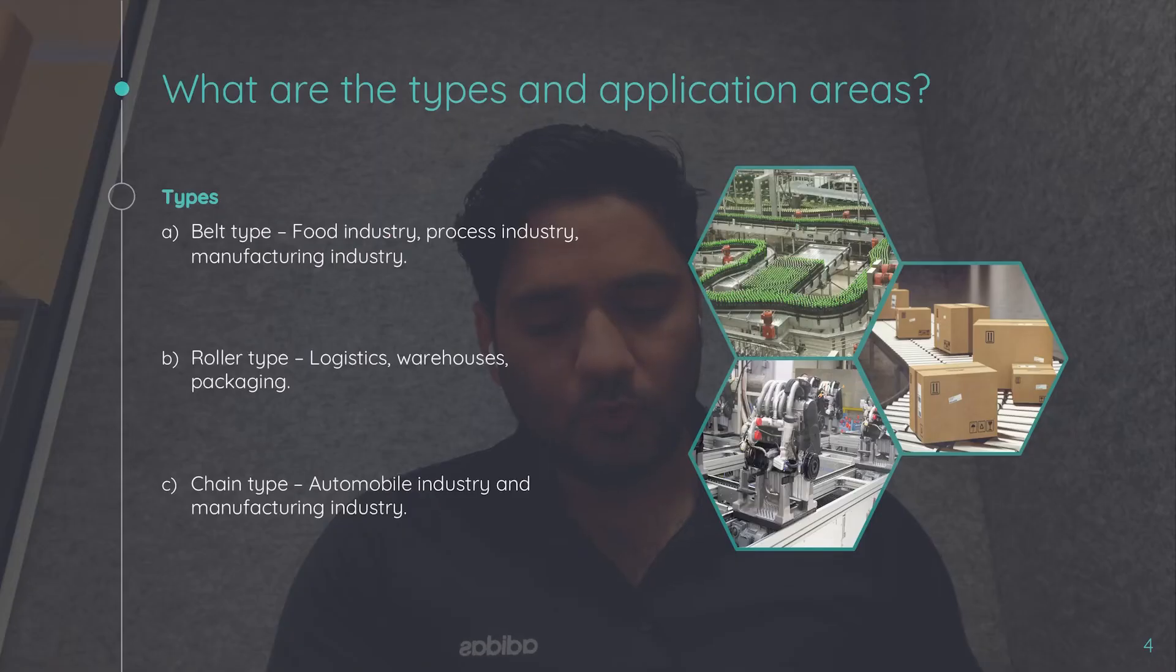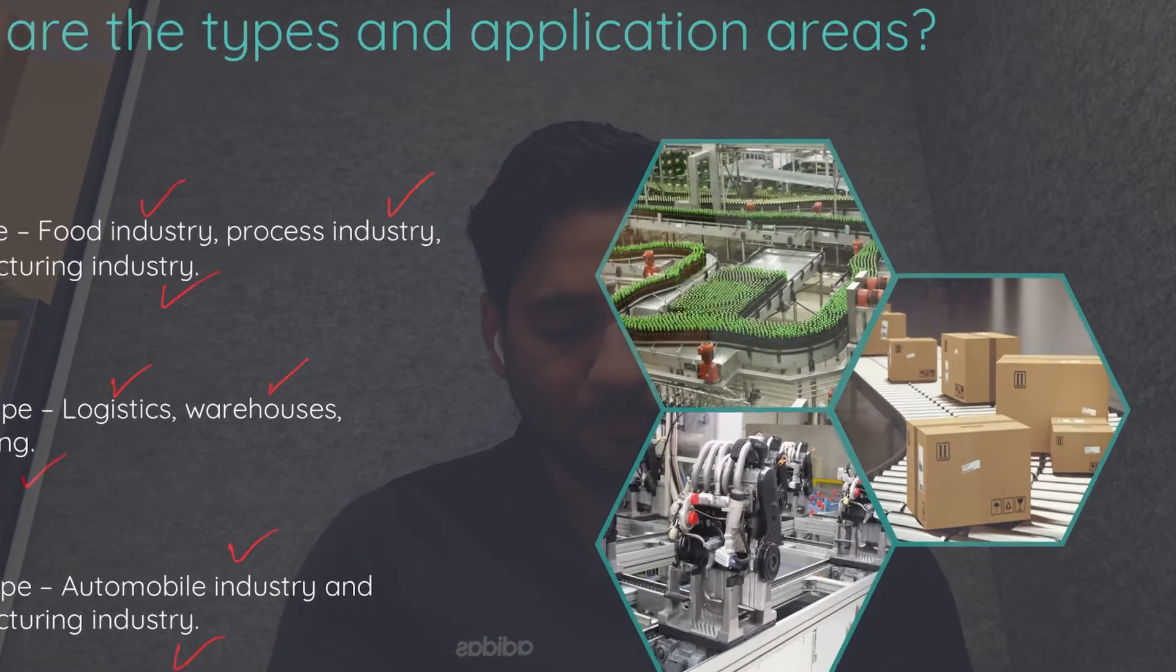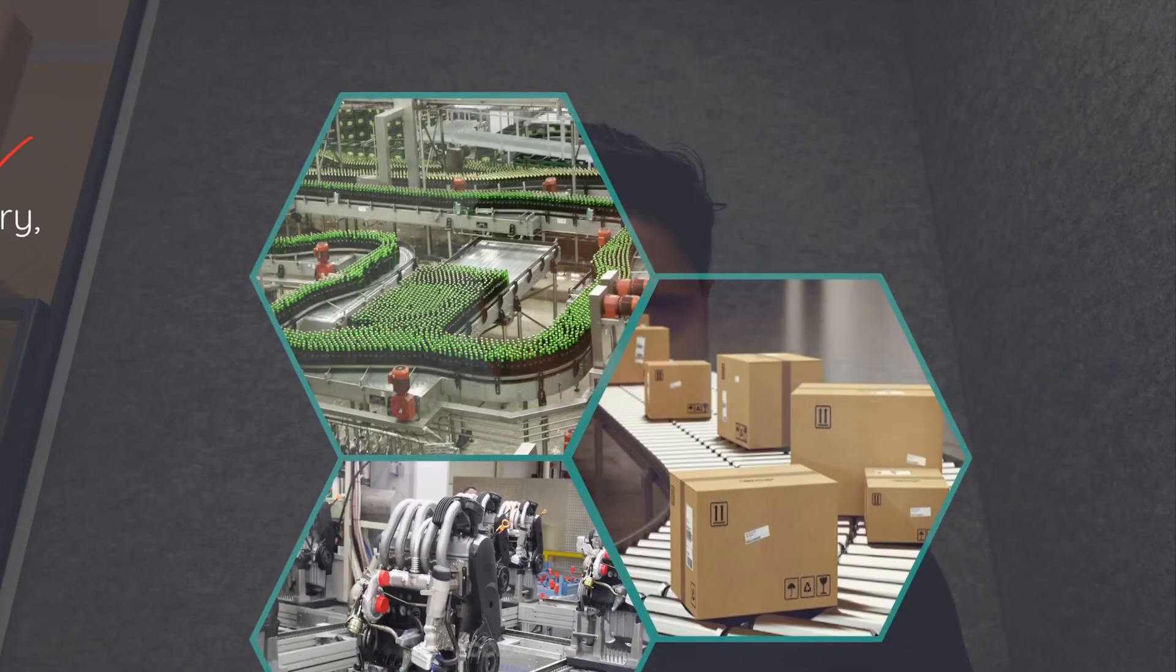What are the typical application areas for these conveyors? For belt type conveyors, we have food industry, process industry, and manufacturing industry. For roller type conveyors, we have logistics, warehouse, and packaging. For chain type, since chain type requires a very special workpiece where the bottom surface should be flat, often a pallet is deployed in this particular area, and this is being used in automobile and manufacturing industries.